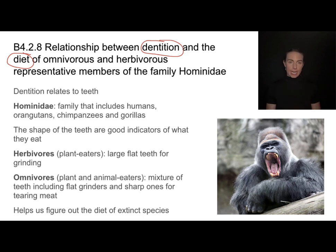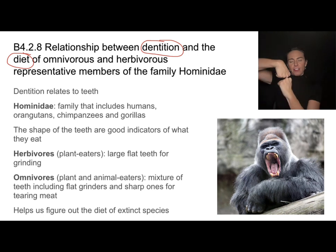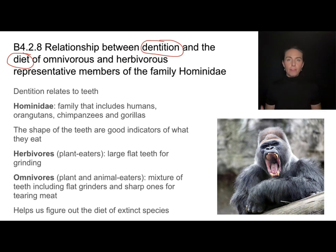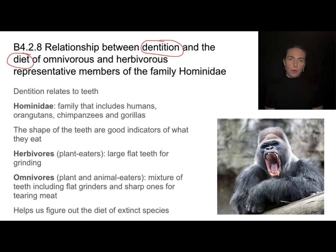Herbivorous organisms in this family are plant eaters and they tend to have large flat teeth good for grinding. If you can imagine the teeth at the back of your mouth, they're big and flat and great for grinding things like seeds and grains. Omnivorous animals — those that eat both plants and other animals — have those teeth but in addition they have sharp canine incisors.